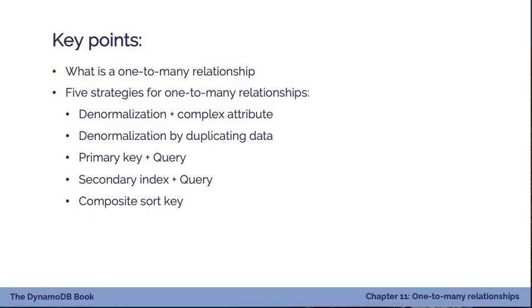Here's what we're going to cover in this chapter. First, we'll talk about what a one-to-many relationship is, then walk through five different strategies for handling them. The first two involve denormalization — either with a complex attribute or by duplicating data across multiple items. Then we'll look at using the primary key with the query operation, a secondary index plus query, and finally highly hierarchical data using a composite sort key.